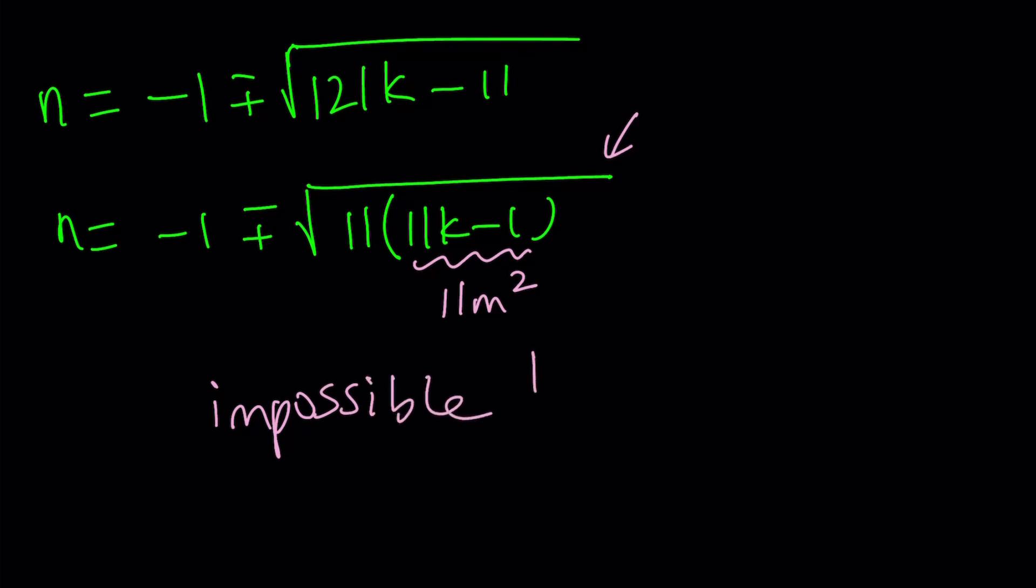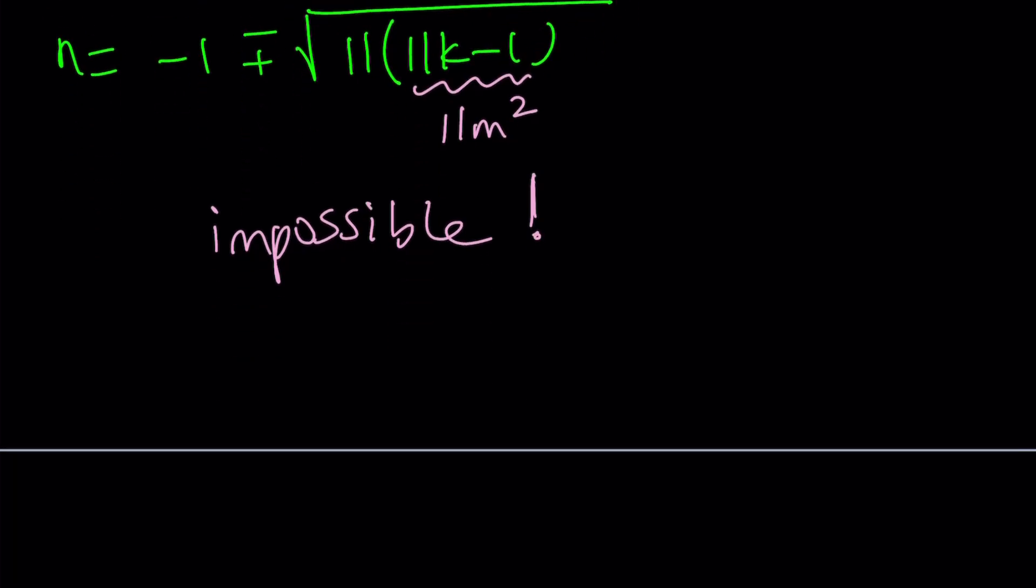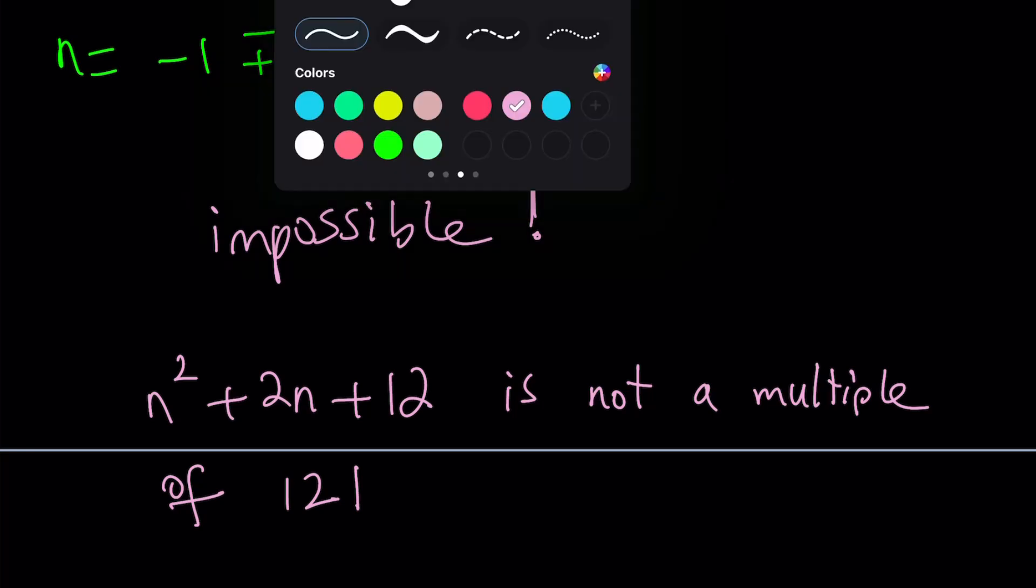So let me tell you what the actual question was. The actual question was show that for all integers n, n squared plus 2n plus 12 is not a multiple of 121. So that was kind of like a proof problem, but I turned it into an equation which we solved. Because sometimes if you don't know what the solution is, it's more fun. So this is not a multiple of 121. That's our conclusion.